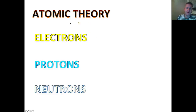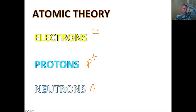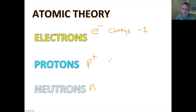Atomic theory — we look at the subatomic particles. This is just a review; we've already talked about this in class. Electrons have a symbol of e with a little negative sign. Protons have a symbol of p with a positive sign. Neutrons have a symbol of a small n. Electrons have a net charge of negative 1. Protons have a charge of positive 1. And neutrons have no charge.